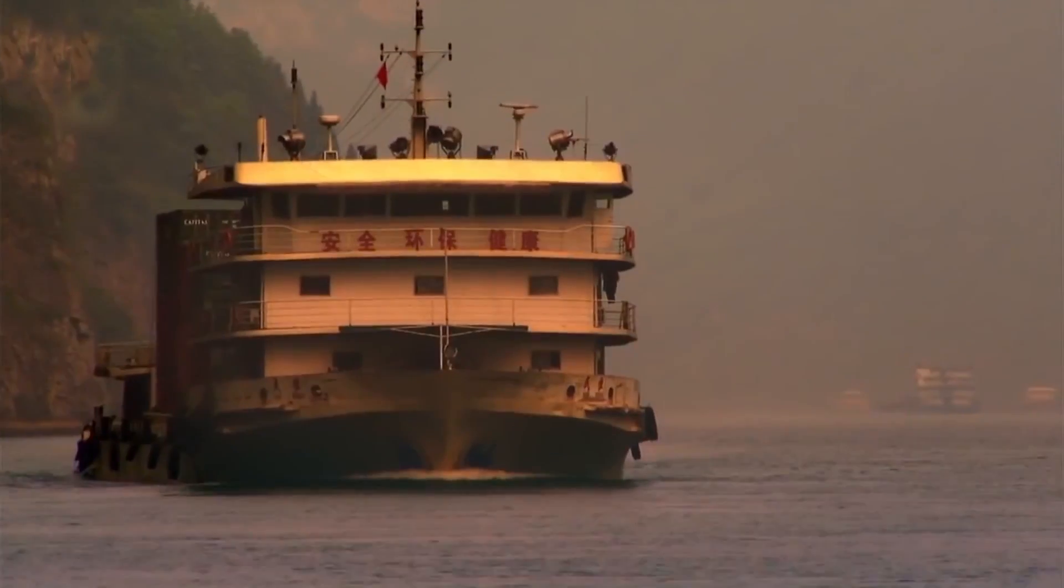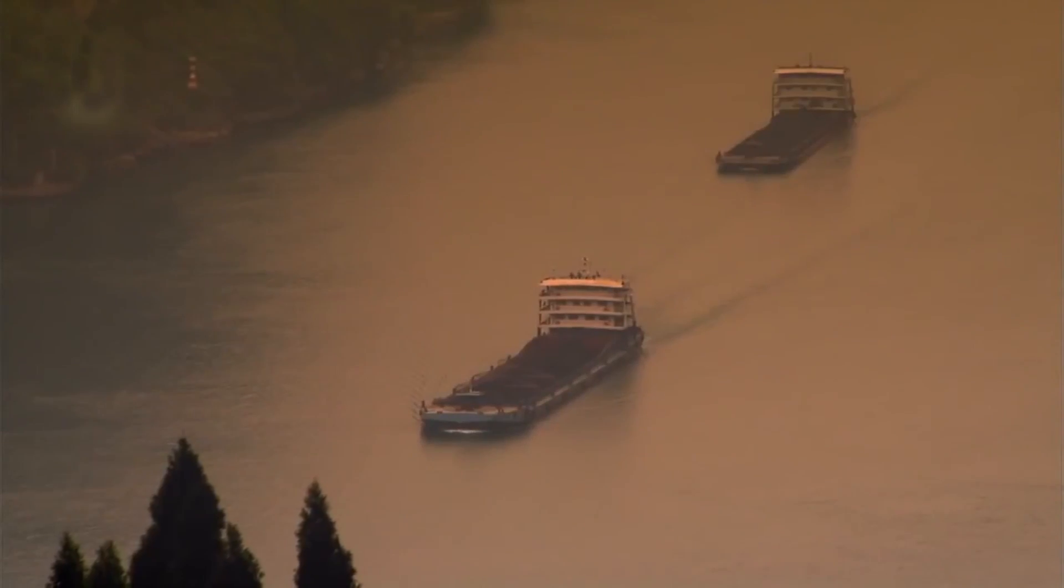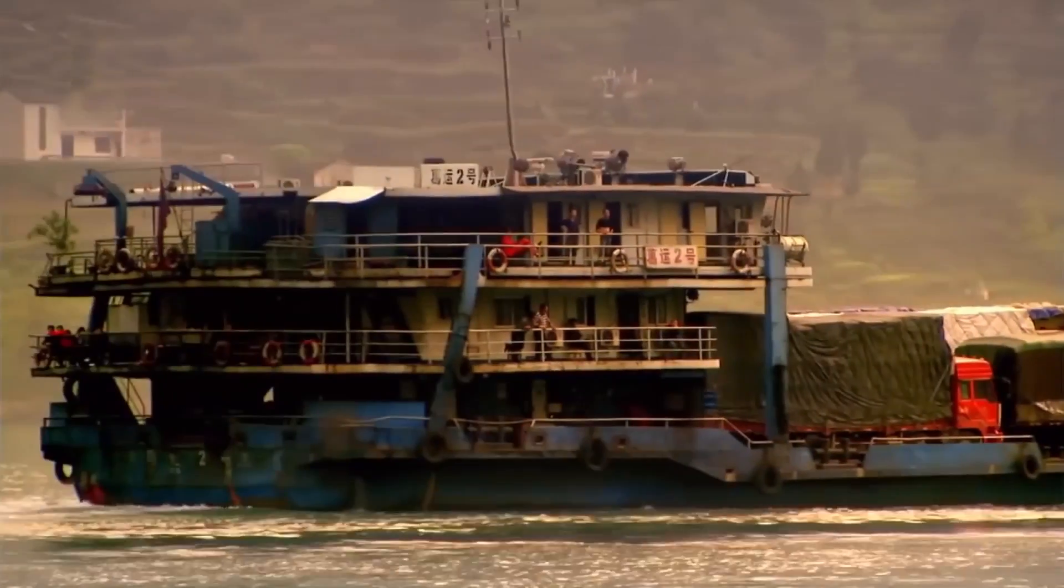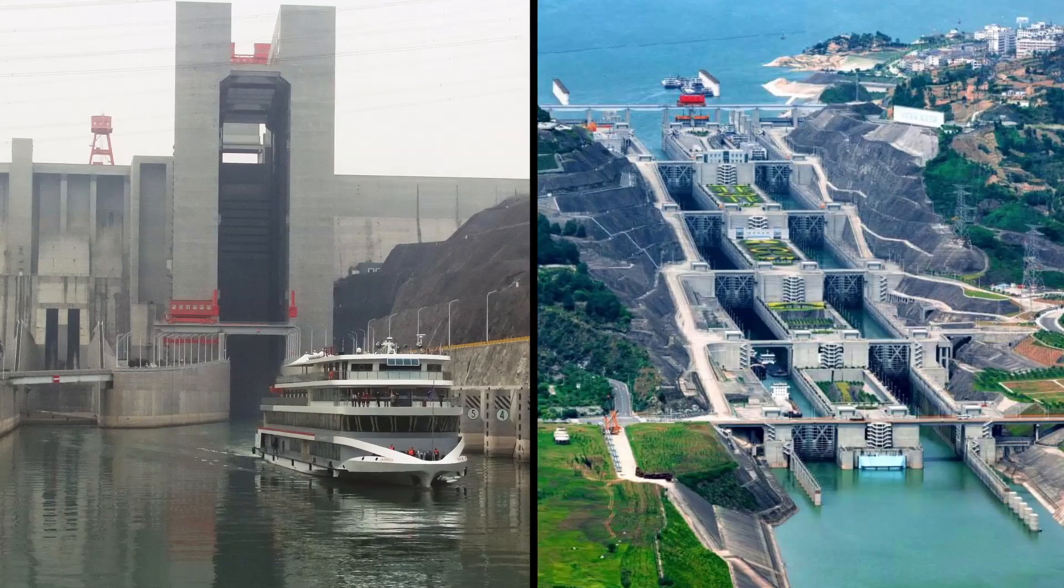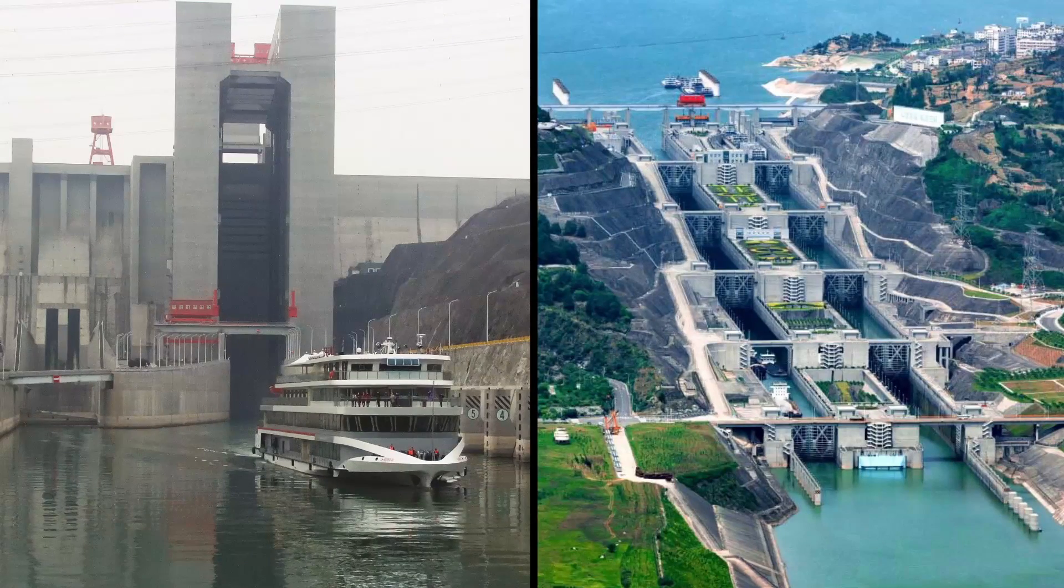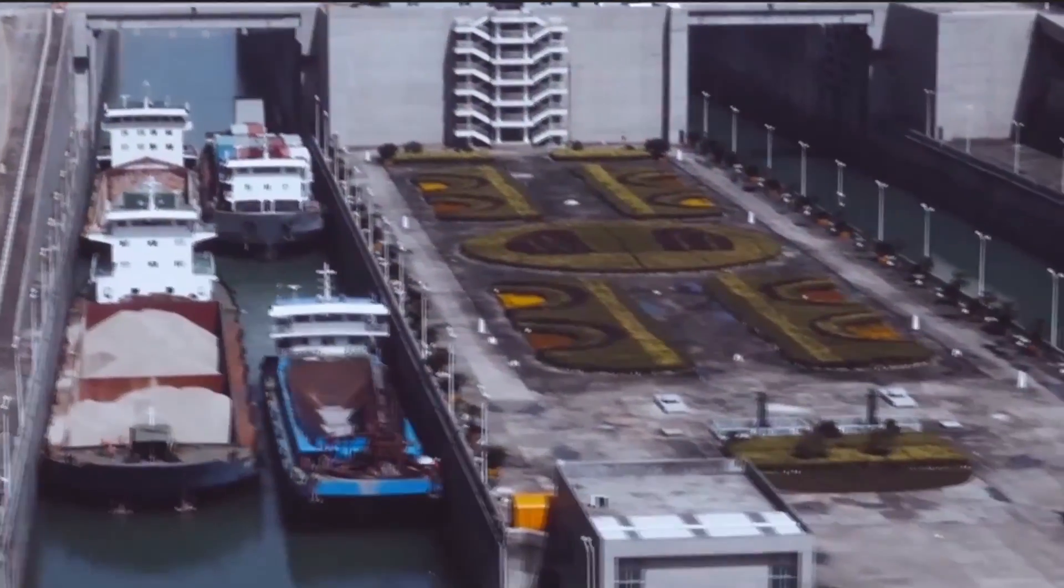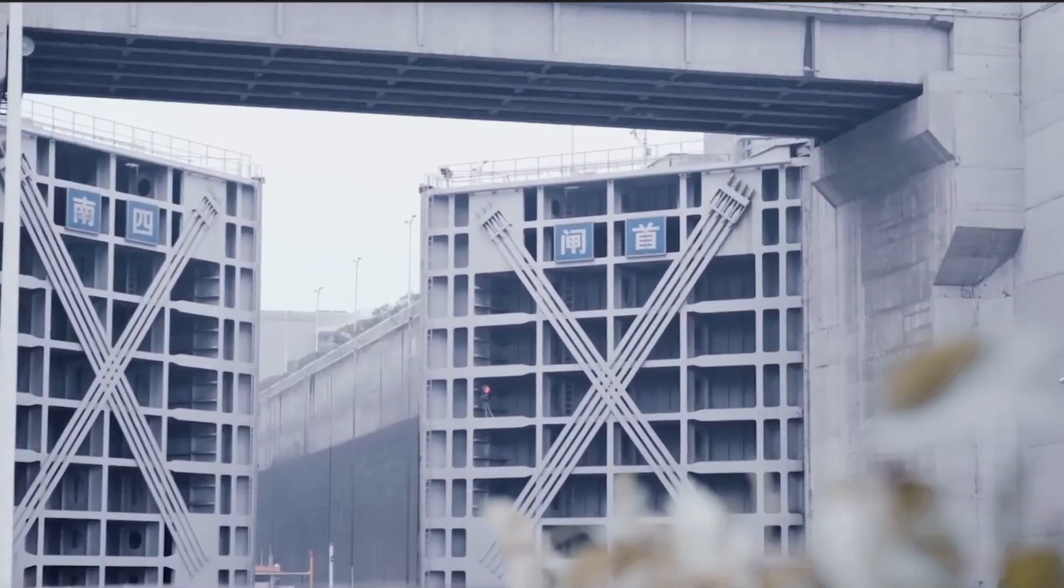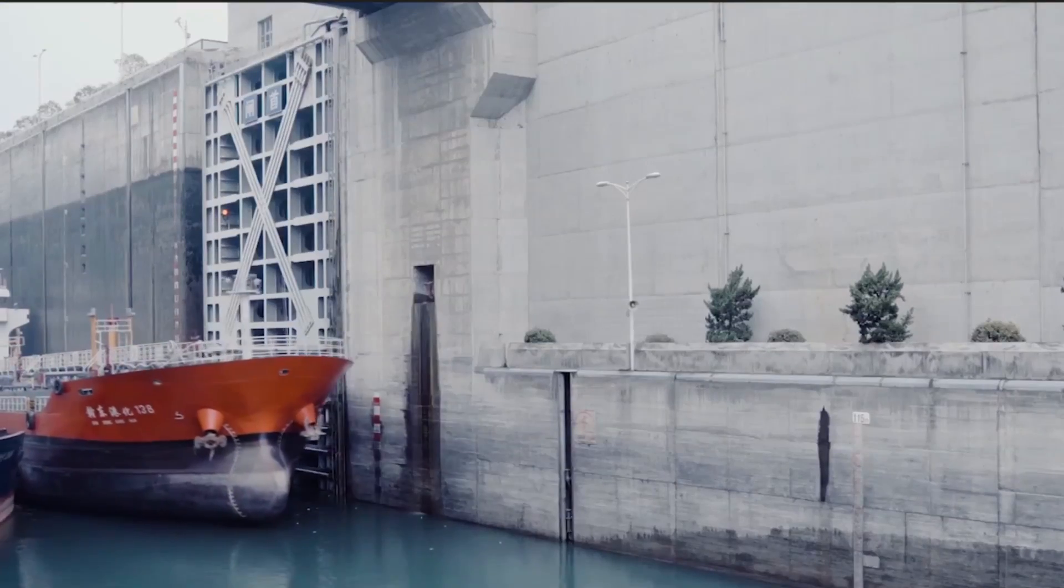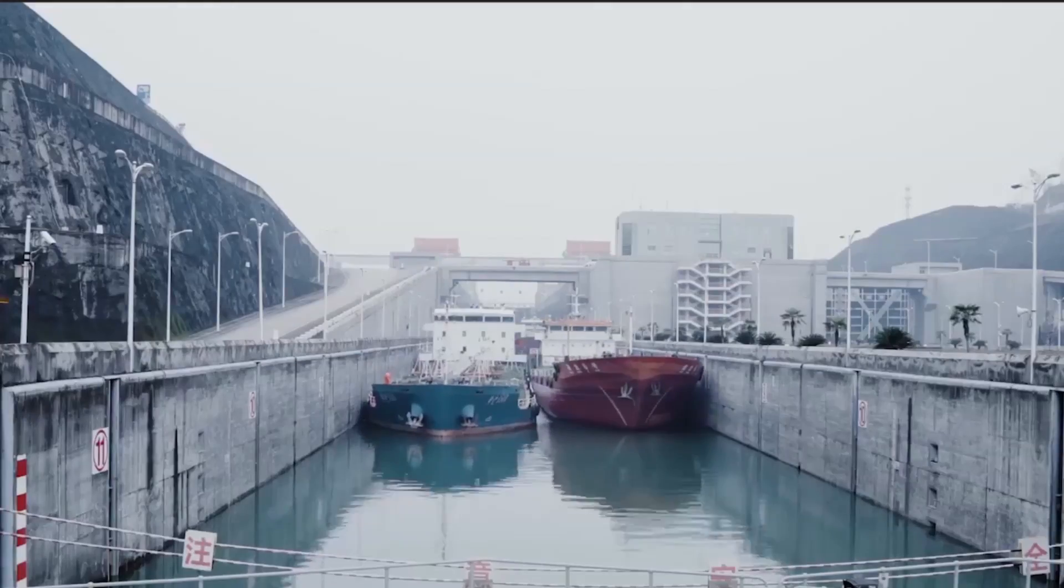But the Yangtze River is navigable, and the dam severely restricted the transport of goods across the longest river in Eurasia. Therefore, the engineers built two locks and a special ship lift. The locks consist of five stairs where the ships are gradually lowered or raised to the level of the river, but it takes four hours to complete—too long for commercial companies that count every hour of downtime.